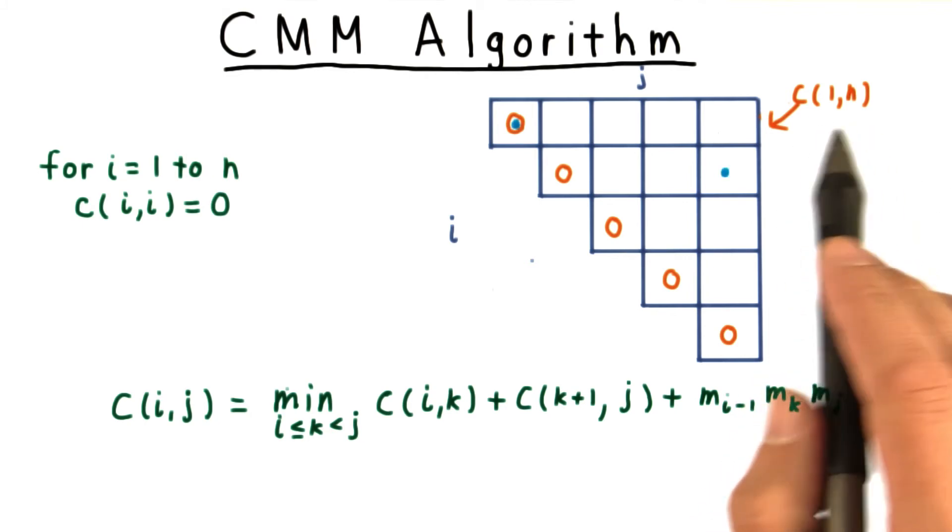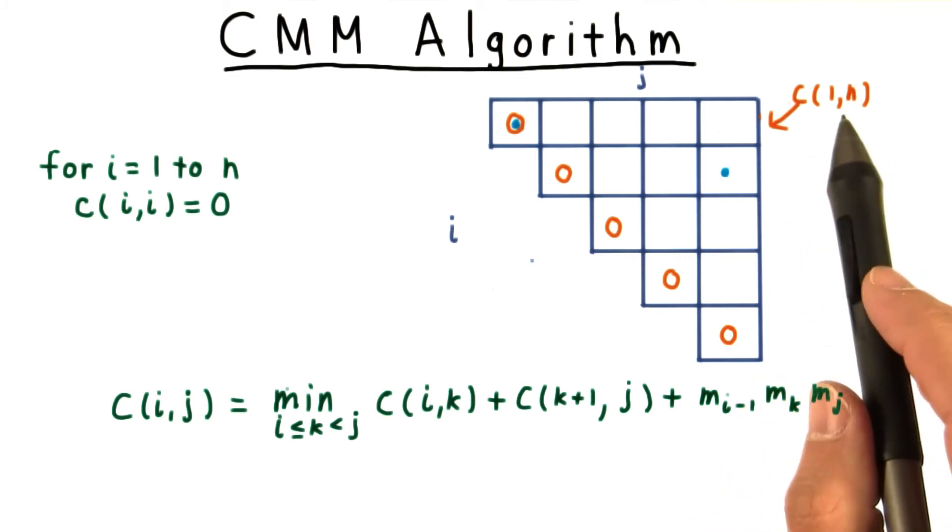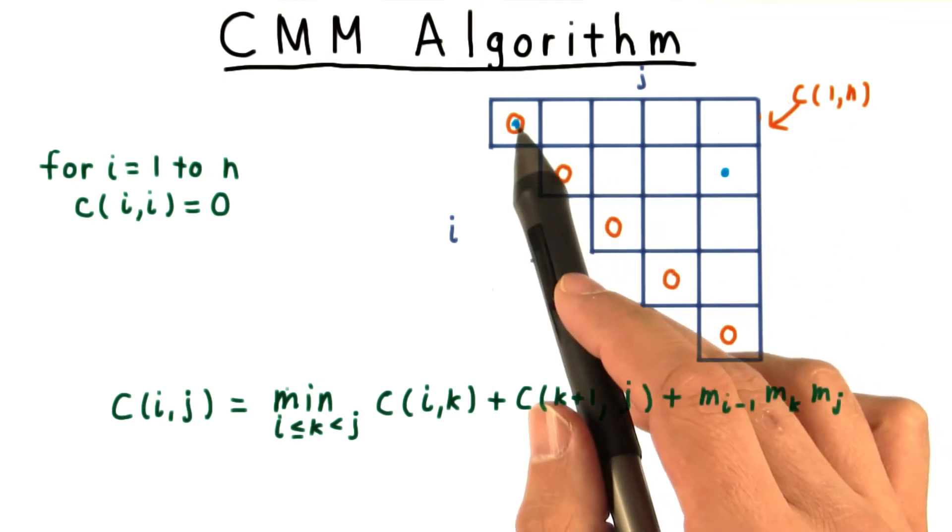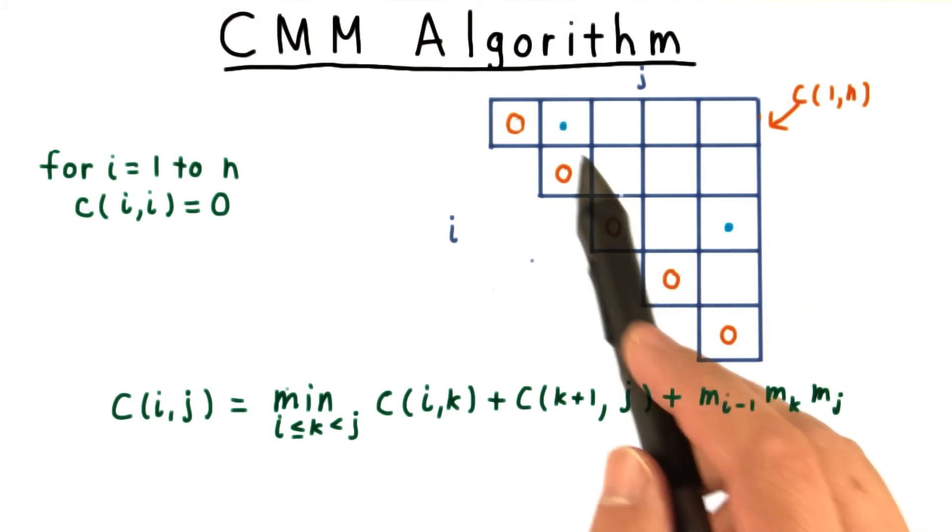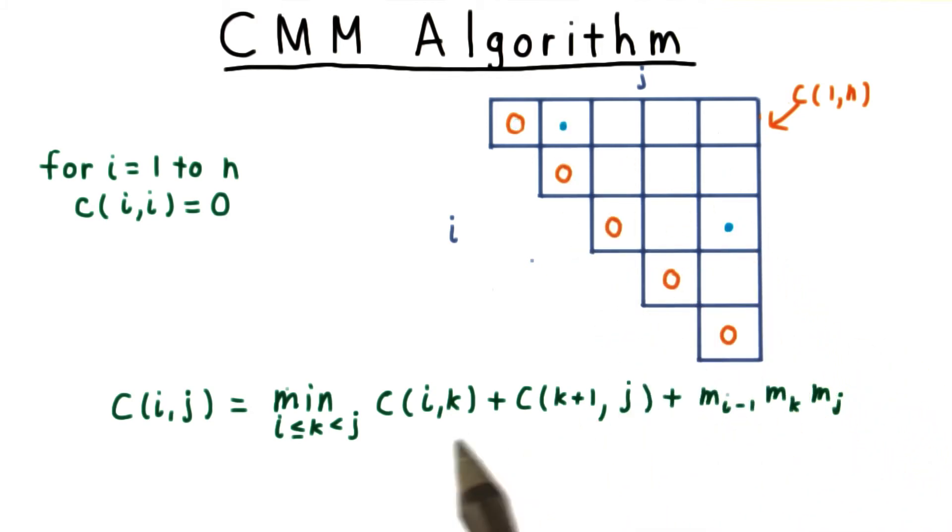Consider which subproblems this depends on. When k equals 1, we're considering these costs here, c11 and c2n. When k equals 2, we're considering these problems here, c12 and c3n.